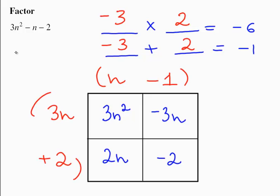This is positive. So in factored form, my answer is (3n + 2)(n - 1).